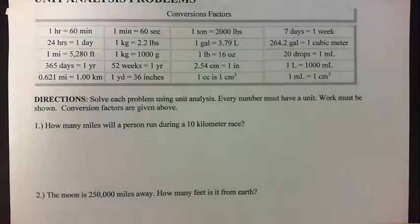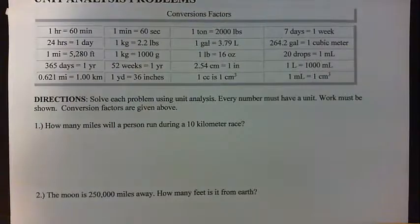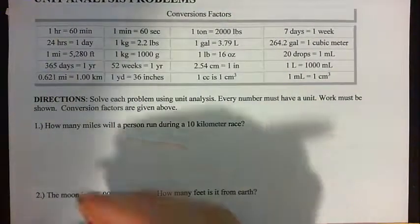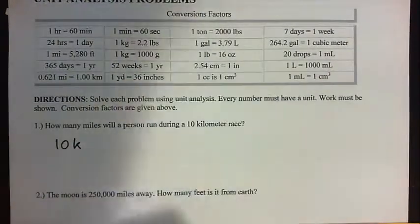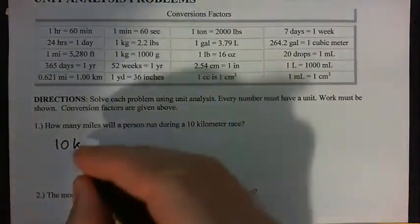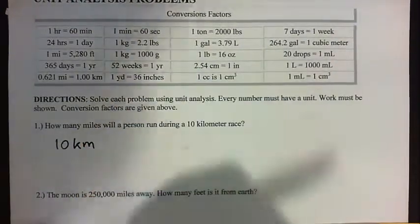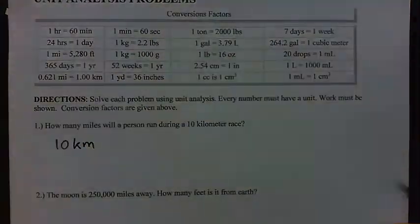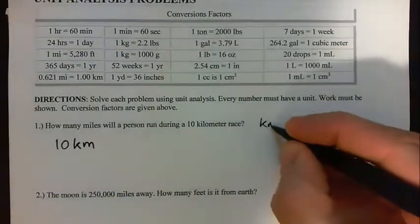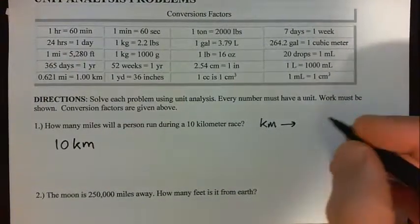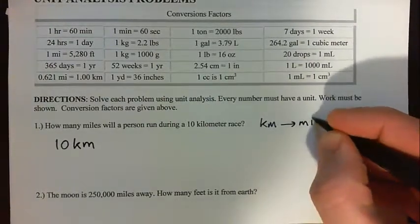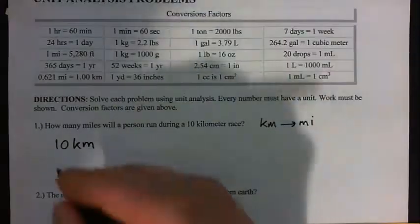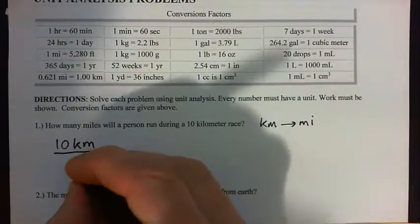The first thing we do is write down what we have and then think about what we want to convert to. So what do we have? We have 10 kilometers — km for kilometers. And we want to go to miles. The shorthand for miles is 'mi'. We like to write this as 10 km over 1.